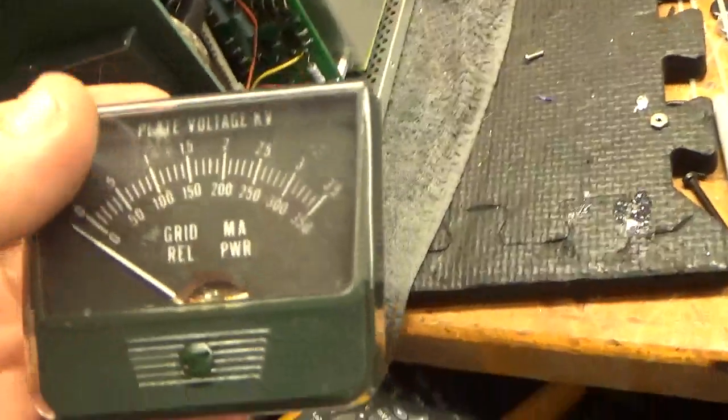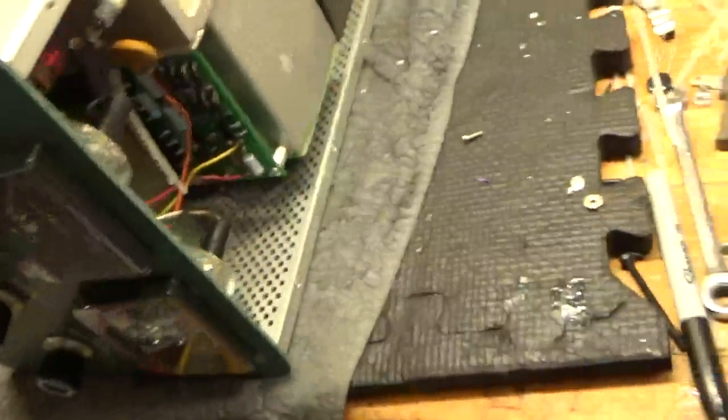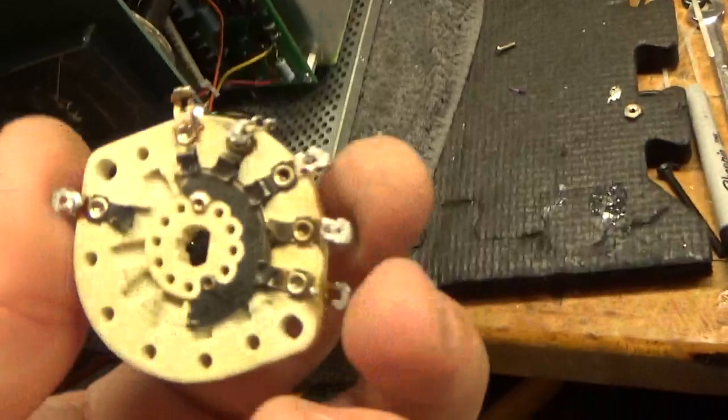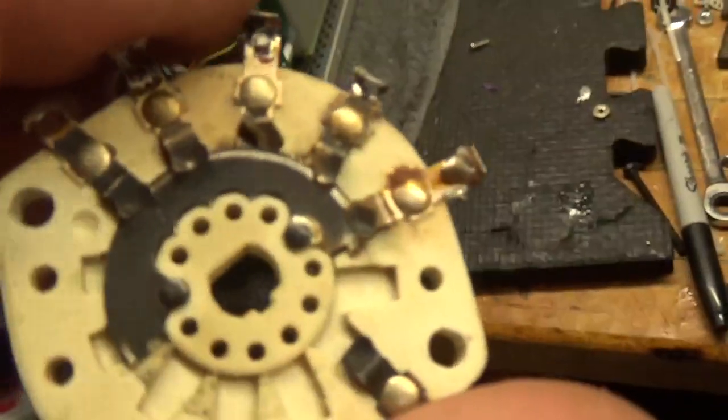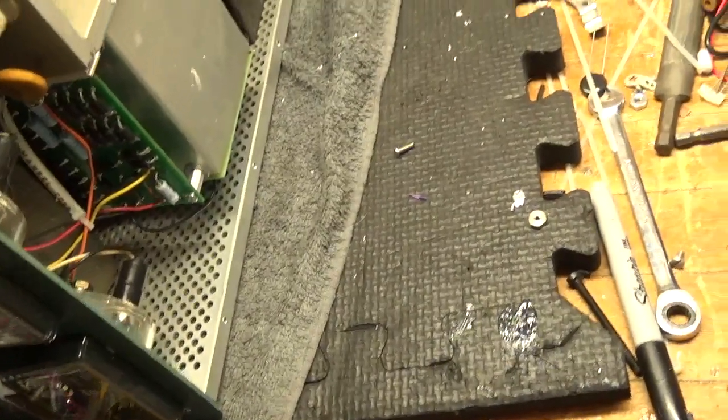Replace the high voltage meter. Replace the output rotary switch, you know, as known as the band switch. You can see multiple bad contacts. Got rid of that parasitic stuff, parasitic suppressor stuff from RL measures.